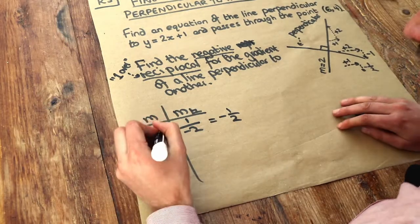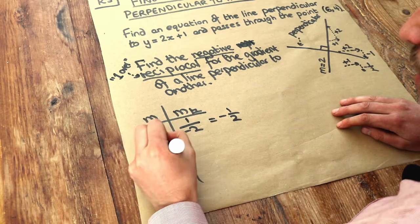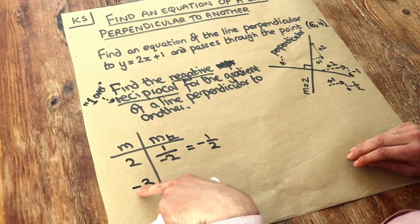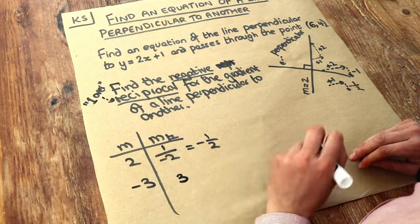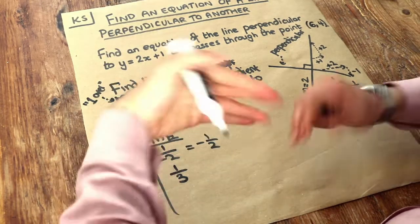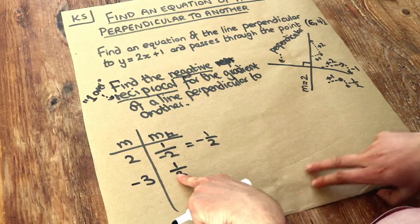What about if the gradient was minus 3? Well we first do the negative of that. Well negative of negative 3 is positive 3, and then we do reciprocal of that, 1 over it. So the 3 gets flipped, we do 1 over it, and the negative becomes positive.